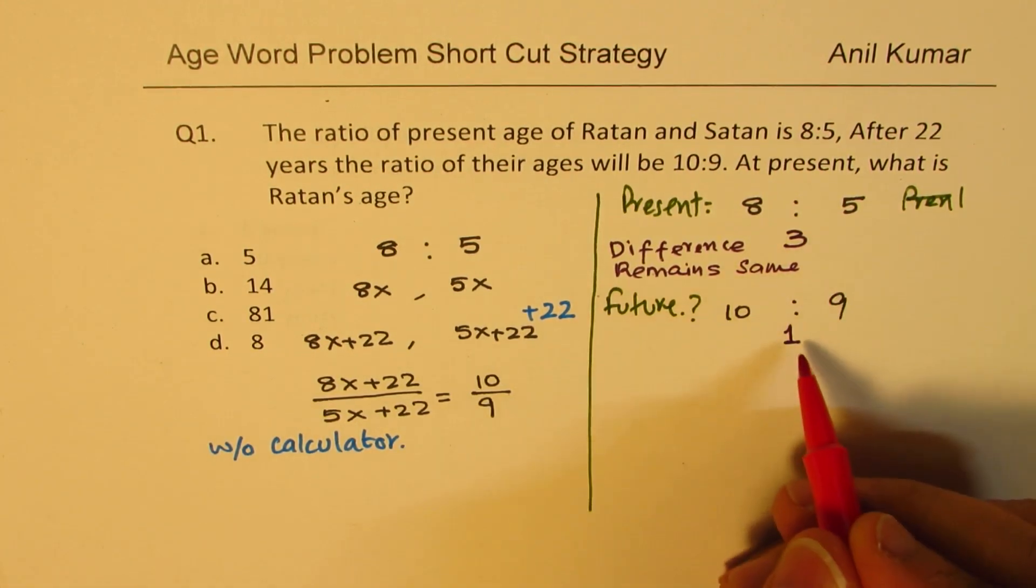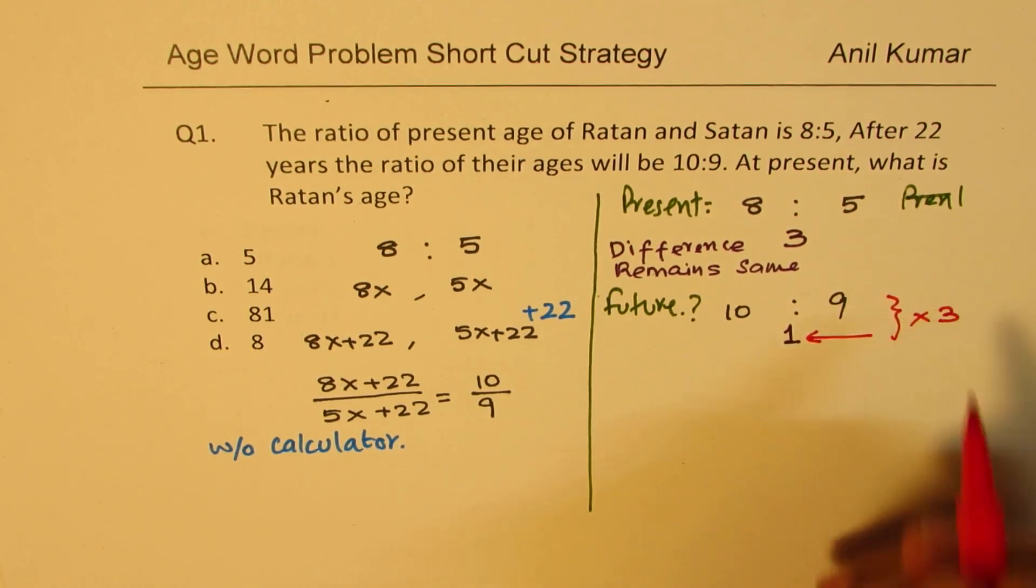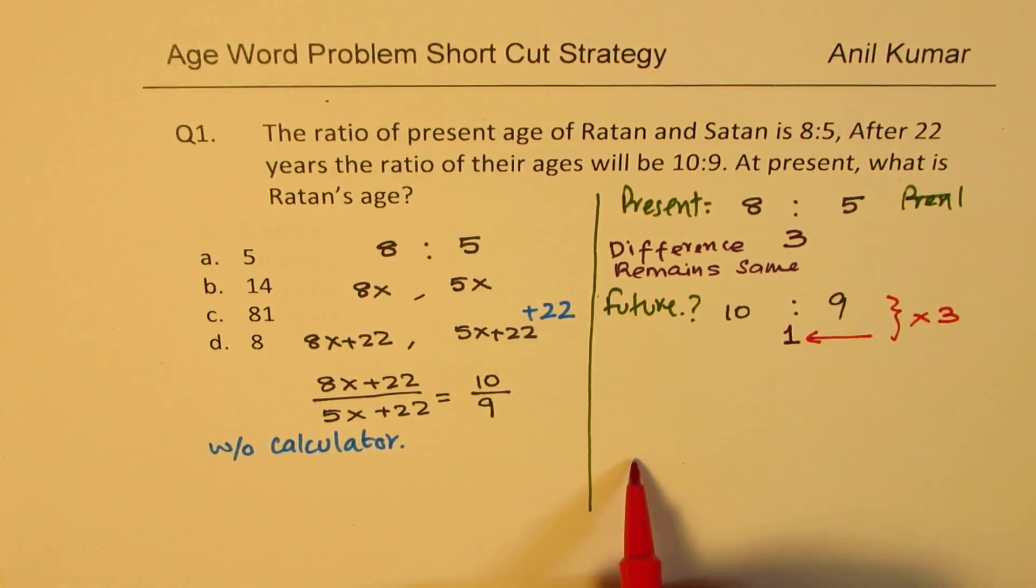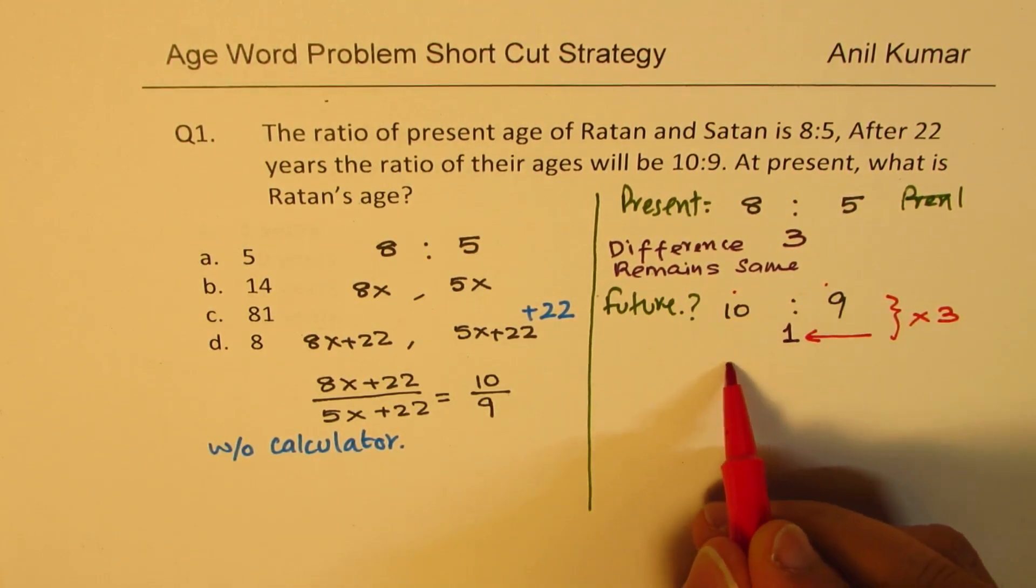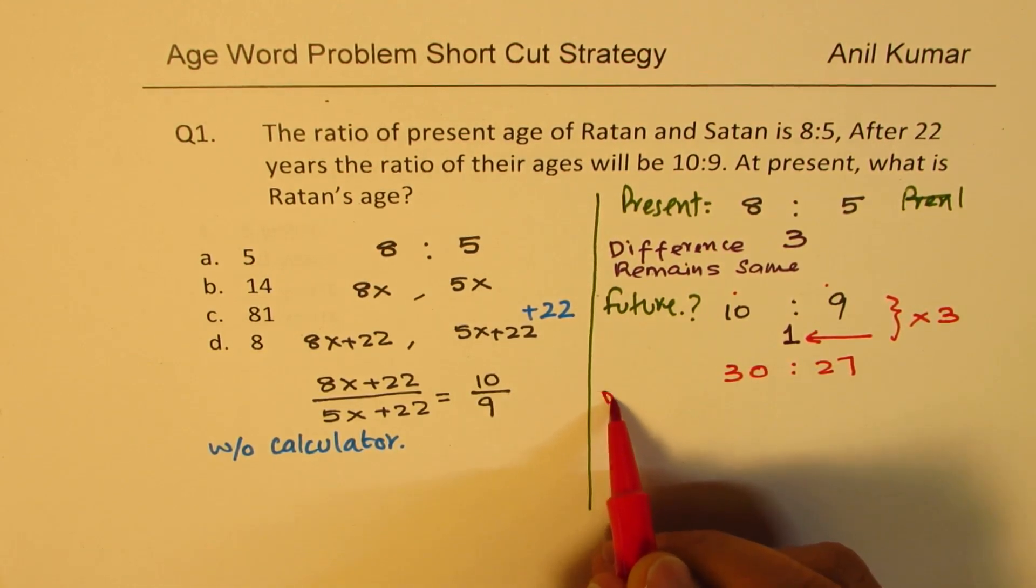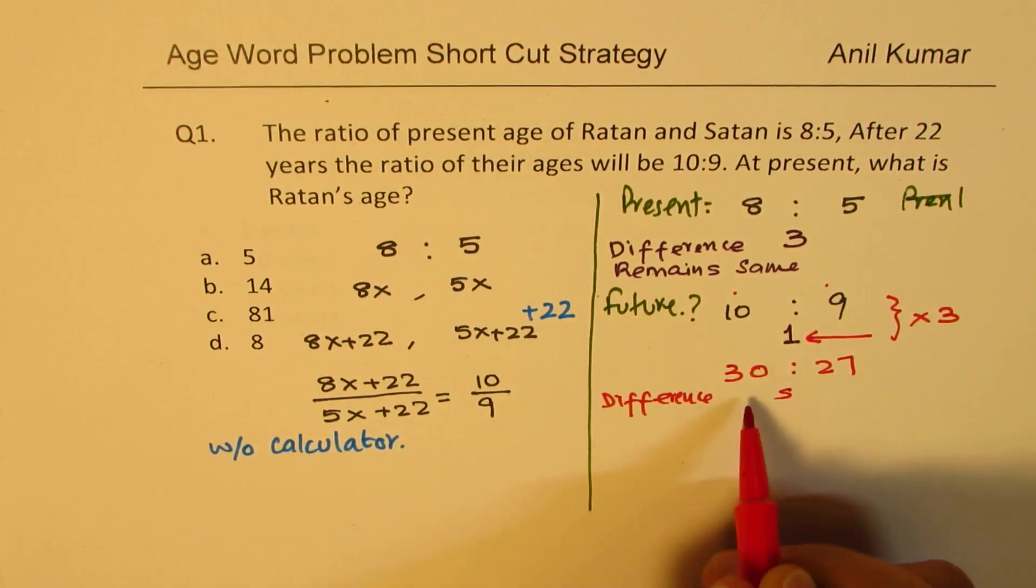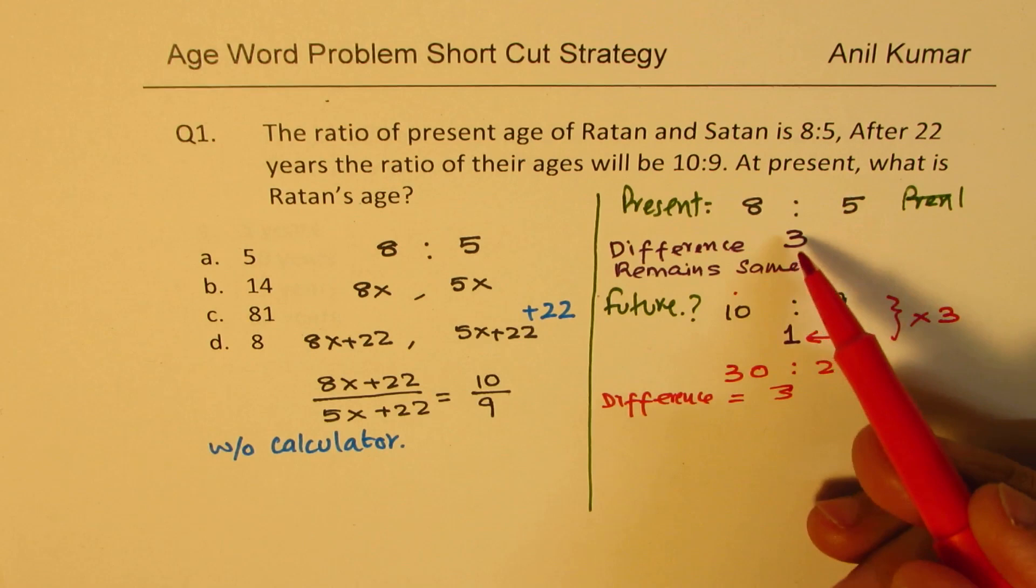To get this as 3, I need to multiply this by 3. If I multiply this by 3, I know difference will become 3. But these numbers will be: I have to multiply the numbers by 3. So I get them as 30 and 27. Now you see difference is 3. Same difference. So we have fixed this criteria. Same difference.